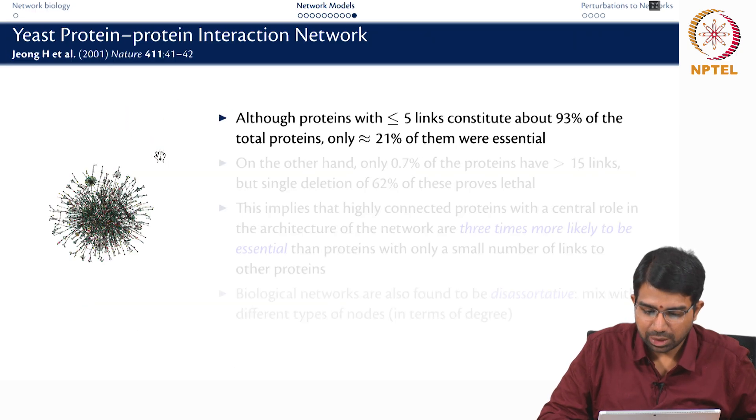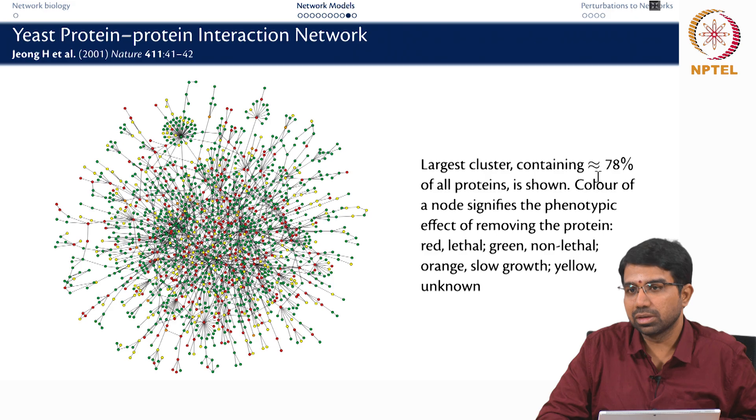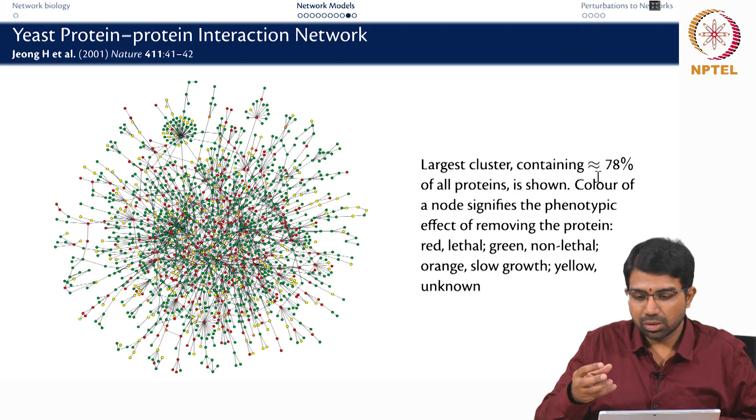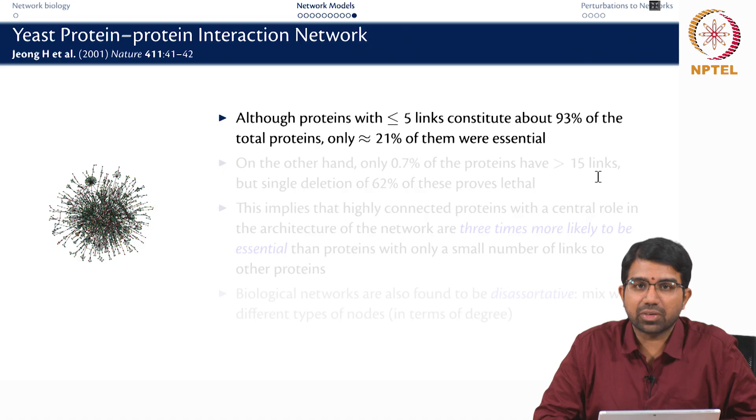So what you observe is that this network actually contains 78% of all proteins in yeast. This is the giant strong component I was talking to you about earlier. Practically all the nodes, 80% of the nodes fall into a single connected component. Although proteins with less than 5 links constitute about 93% of the proteins, only 20% of them were actually essential.